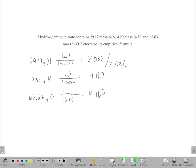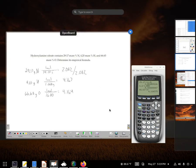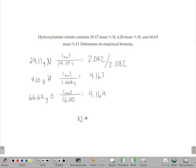So I'm just going to take one of those and divide it by that 2.08, and I get 2. So I have an empirical formula of NH2O2.